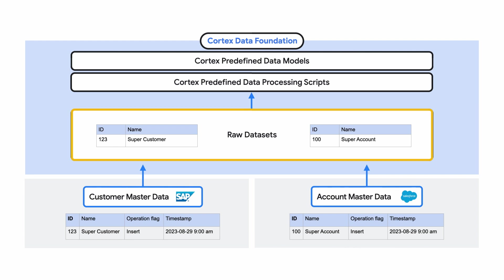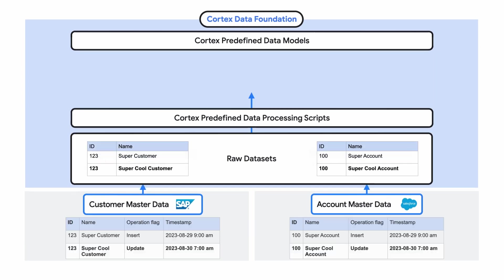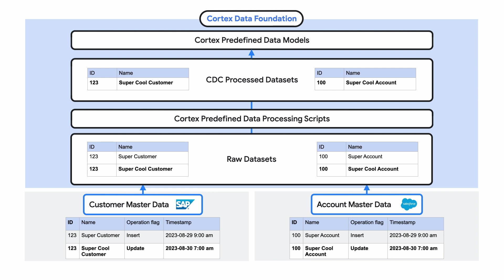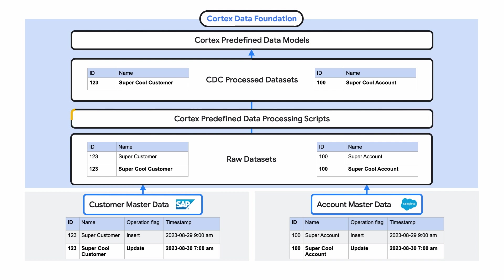Once landed, depending on how the integration tool captures and processes changes from source into BigQuery, some data requires further processing. For example, is it just append, or does the solution perform merge or upserts? We call this process CDC for change data capture. To make sure Cortex predefined data models have the latest version of truth for reporting, we provide data processing scripts that can help handle the CDC process as well as the mapping of different field names or formats. We call the BigQuery dataset where this processed data lands the CDC process dataset — this data is now reporting-ready, reflecting the latest records in the right format.